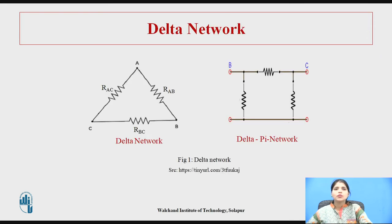Now let us look at the delta network. Here the circuit elements are connected in such a way that they form the shape of a triangle or delta. A, B, and C are the nodes of the network, and R_AB, R_BC, and R_CA are connected between these three nodes.